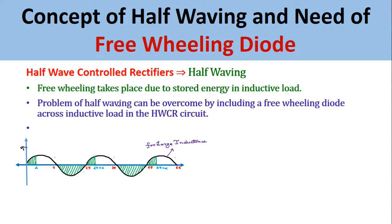To overcome this half waving phenomena, we use a freewheeling diode across the inductive load in the half wave control rectifier. This freewheeling takes place due to stored energy in the inductive load. The problem of half waving can be overcome by including a freewheeling diode across the inductive load in the half wave control rectifier with RL load or inductive load.